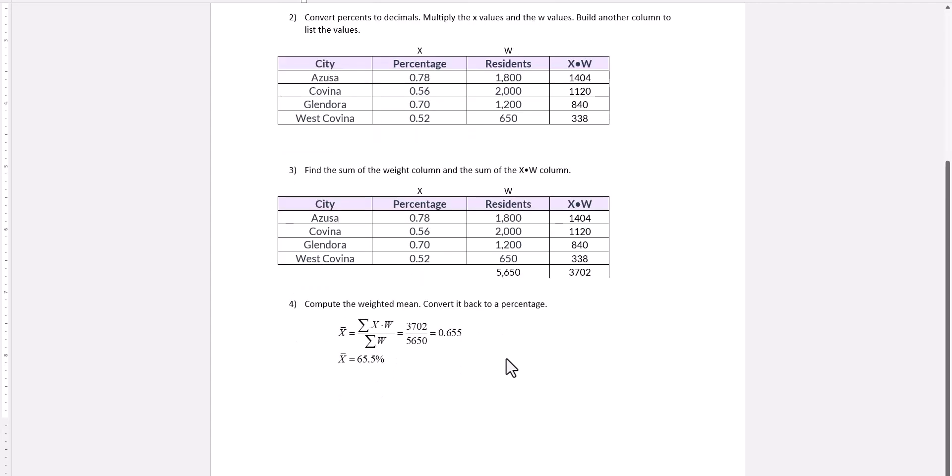We're now ready to calculate the weighted mean, X bar. It's the sum of the X times W column divided by the sum of the weights. So 3,702 divided by 5,650.